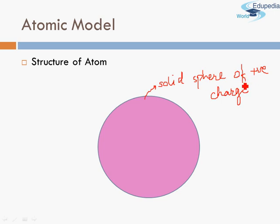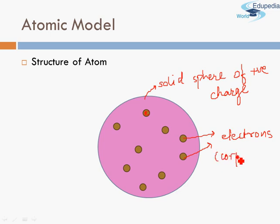And he knew that there are electrons there. So what he said was that electrons will be embedded inside this solid sphere of positive charge. Each of the smaller circles represent an electron. So these are basically your electrons.